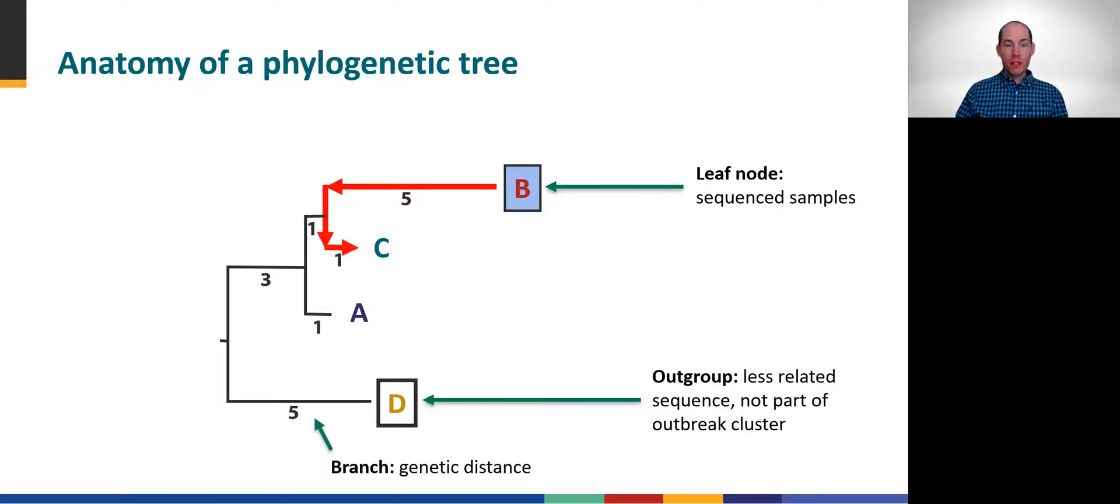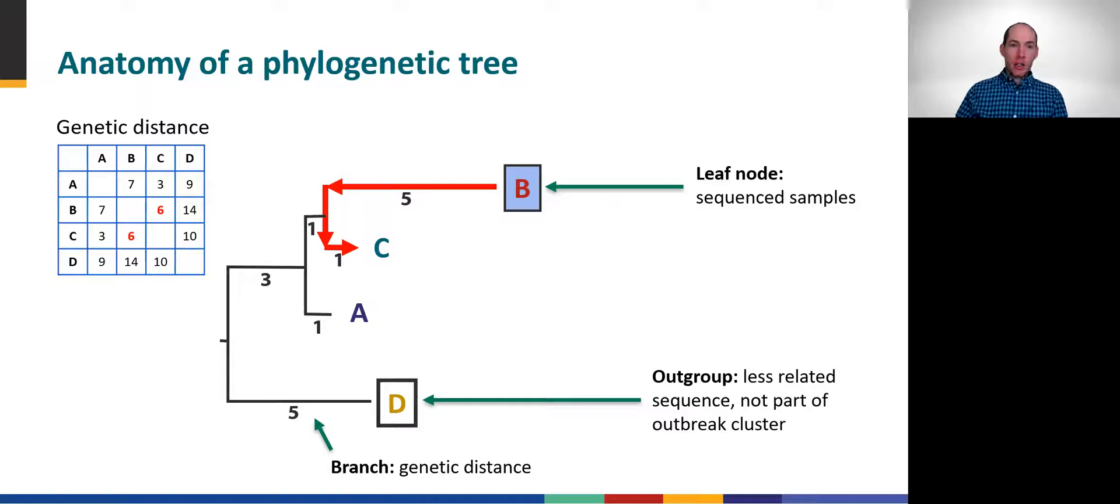The horizontal branches of the tree indicate genetic distance between each of the nodes. The numbers in this example indicate SNPs. We can determine the total number of SNP differences between any two isolates by simply tracing the path between them while adding up the distance numbers. For example, the distance between isolates B and C is calculated along the red arrows: 5 plus 1 equals 6 SNP differences. And if you calculate all the pairwise distances between these four leaf nodes, you can recreate a genetic distance matrix for the isolates, just like the one we saw before, that was calculated from a multiple sequence alignment.